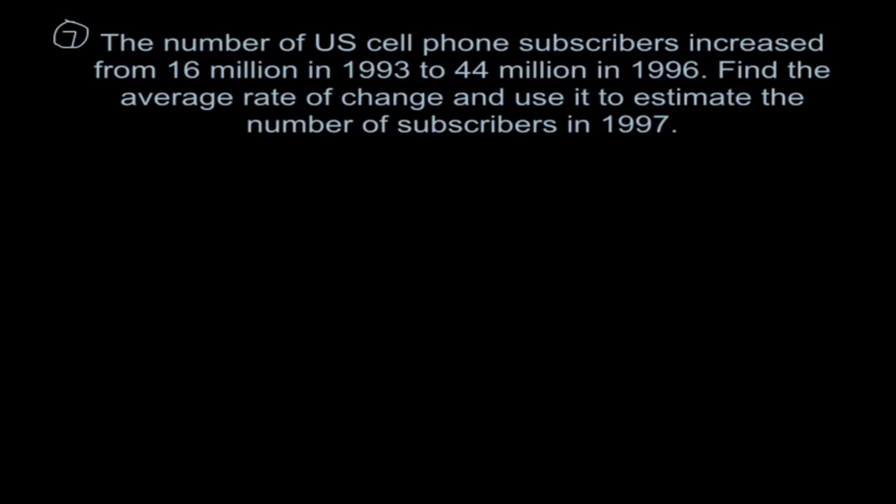And we are going to end this lecture with your favorite type of problem, a word problem. So this is an old word problem from probably before you guys were born. The number of U.S. cell phone subscribers increased from 16 million in 93 to 44 million in 96. Find the average rate of change. I'm going to pause right there. That means we are finding the slope. Whenever we see average rate of change, it means slope. And then we're going to use that slope to estimate the number of subscribers in 1997.